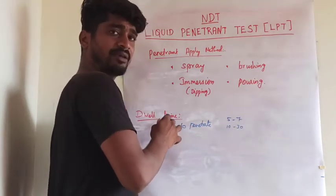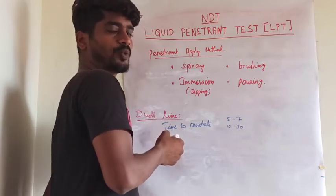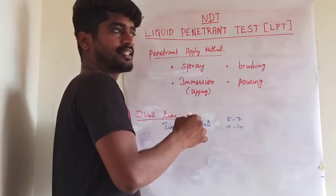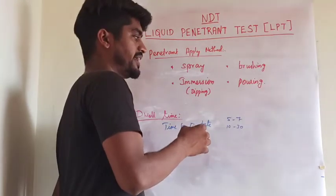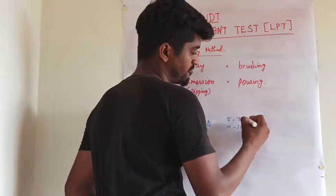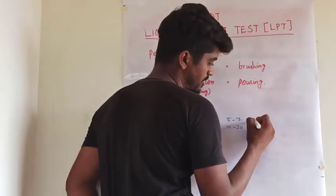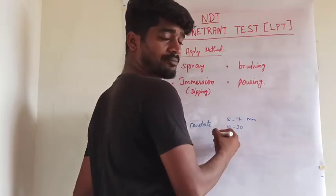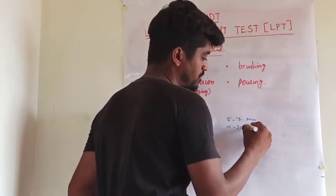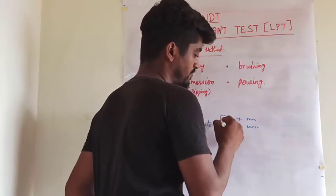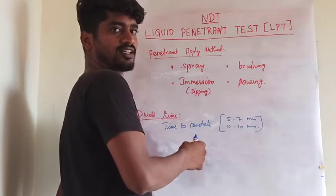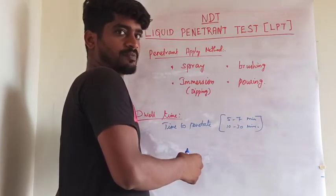Dwell time is the time required for the penetrant to penetrate inside the metal or material. The minimum dwell time is 5 to 7 minutes and the maximum time is 10 to 30 minutes. During the penetration process, capillary action takes place.